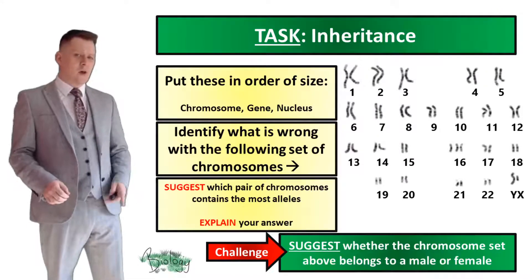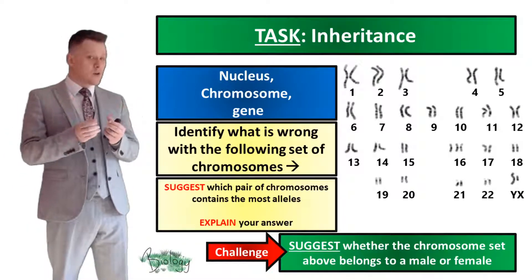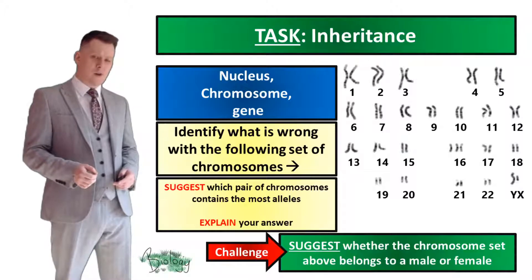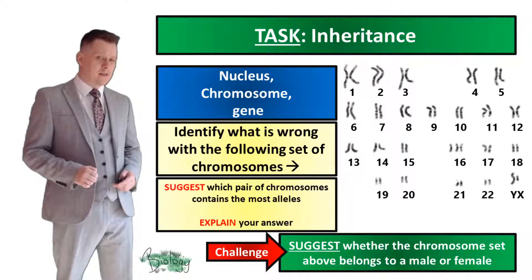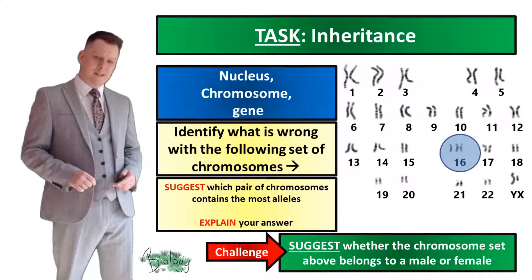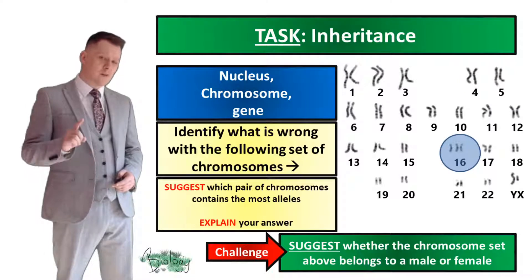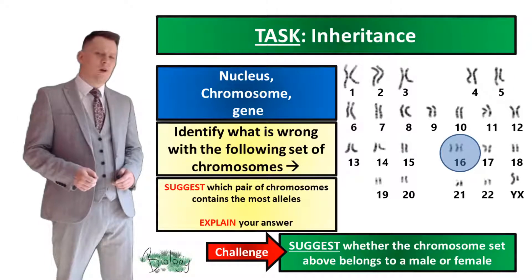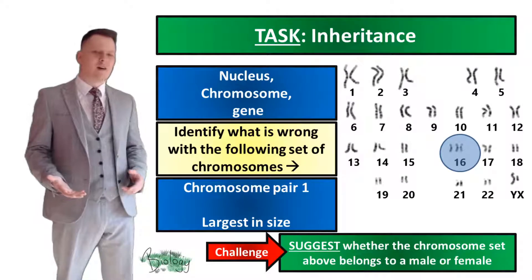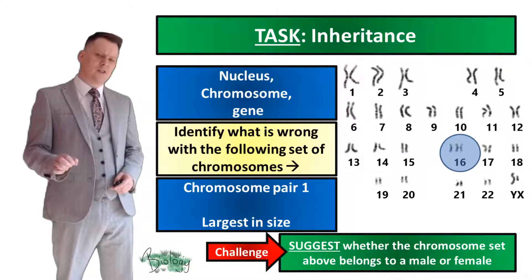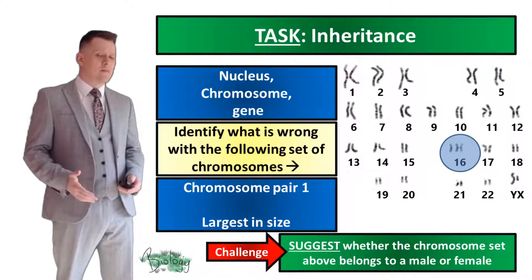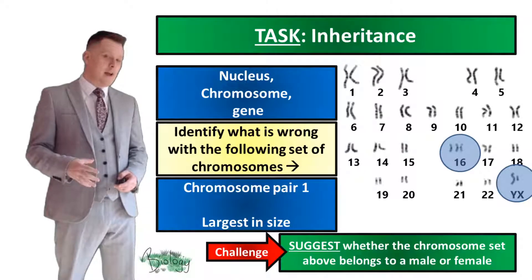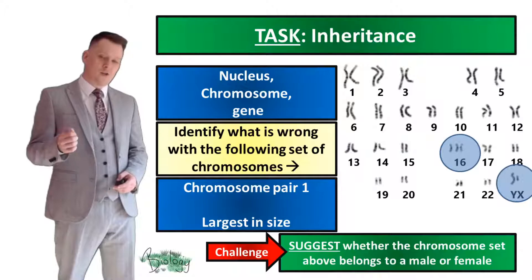The biggest is the nucleus; inside the nucleus you get chromosomes, and chromosomes are made up of a series of genes. To identify what was wrong: our chromosomes tend to come in pairs, but in chromosome set 16 there are three chromosomes — one extra chromosome than normal. The pair with the most alleles would be chromosome set 1, because it's the largest and can contain the most genes. For the challenge, these chromosomes belong to a male — they have both an X and a Y chromosome. A female would have two X chromosomes.